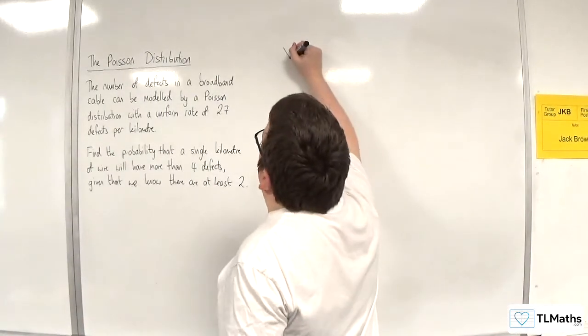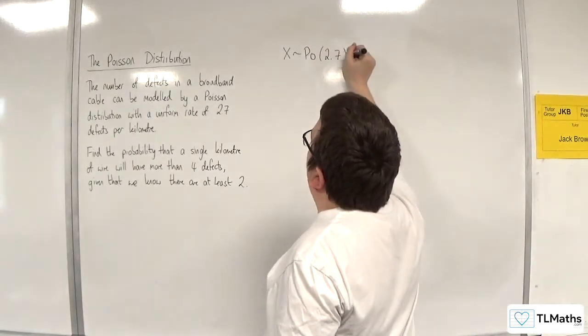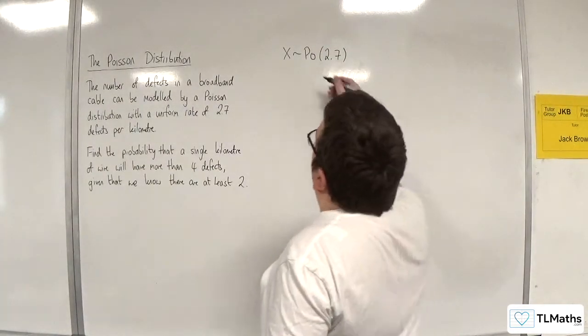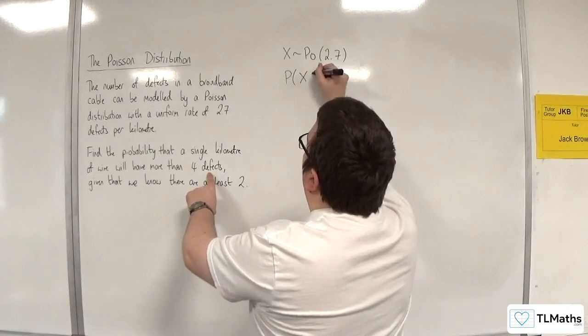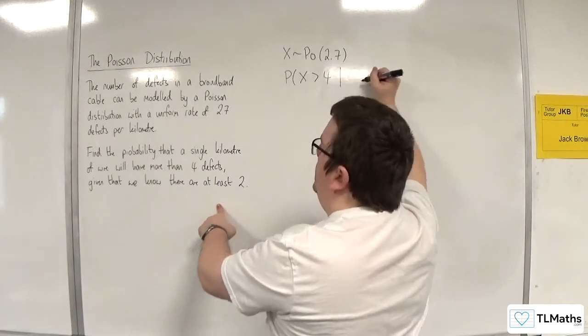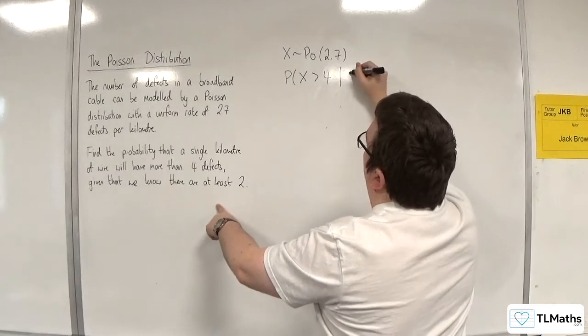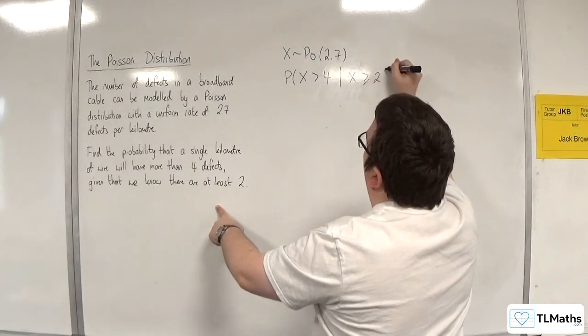So we have a Poisson distribution with 2.7 as lambda. We want to find the probability that there will be more than four defects, given that we know that there are at least two, so greater than or equal to 2.